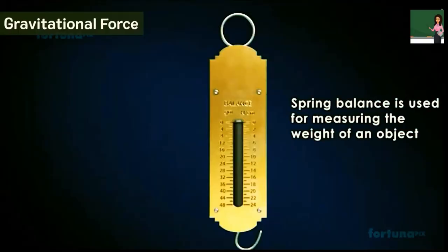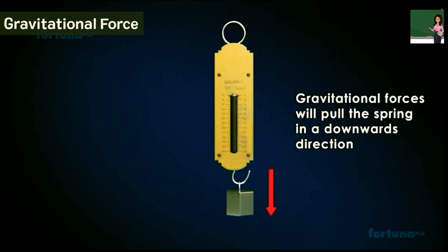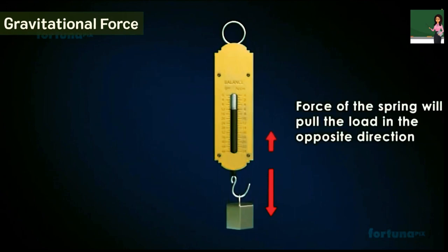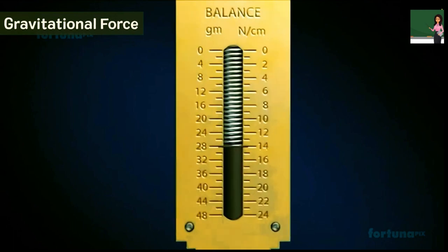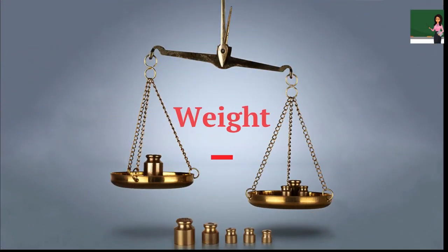Do you know? To weigh an object, it is hung from the hook of a spring balance. The suspended object is pulled downwards by the force of gravity. At the same time, the force of the tension in the spring constantly pulls the object upwards. The object comes to rest when the tension in the spring and the gravitational force on the object become equal. In this position, the scale on the spring balance shows the gravitational force acting on the object, which is the weight of the object. The gravitational force acting on an object is called the weight of that object.